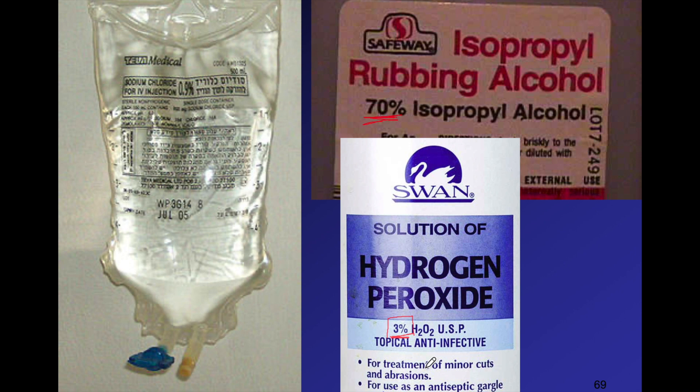Starting at around 30%, hydrogen peroxide will begin burning your skin. At around 90%, it can become so unstable it can cause things to burst into flames — it's a very dangerous, toxic material. What we use for cuts is a very highly diluted solution.